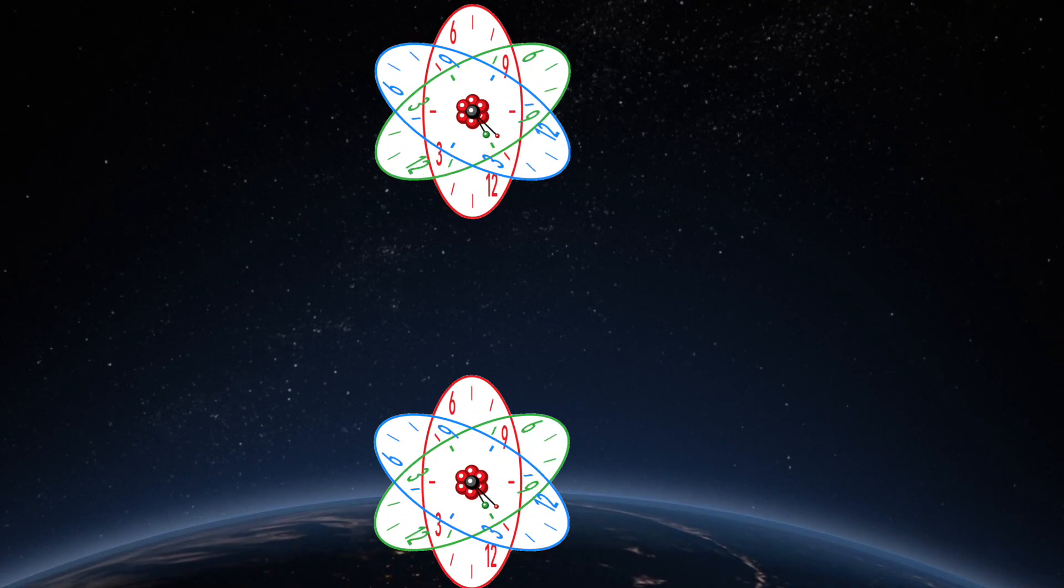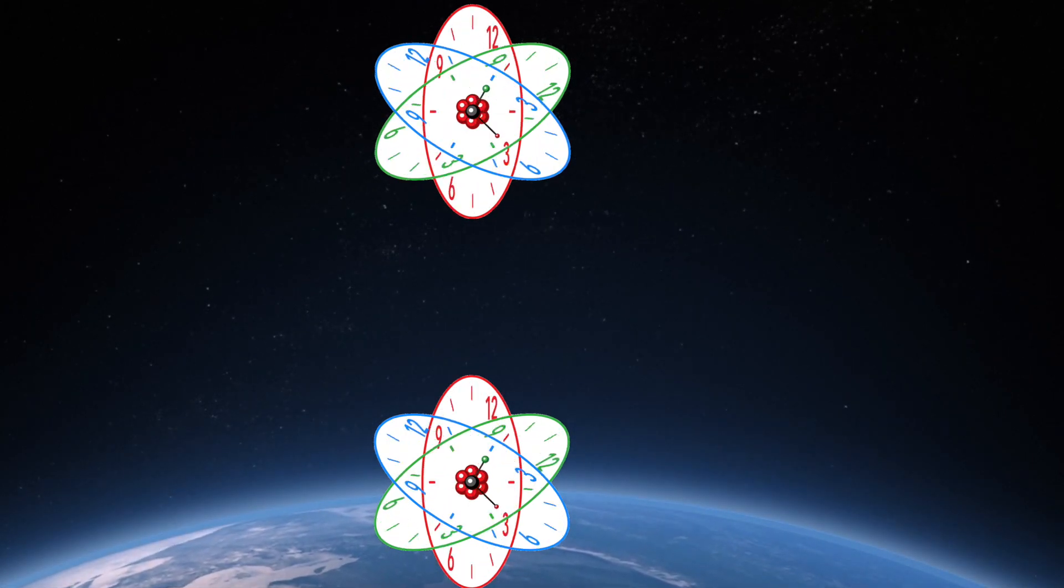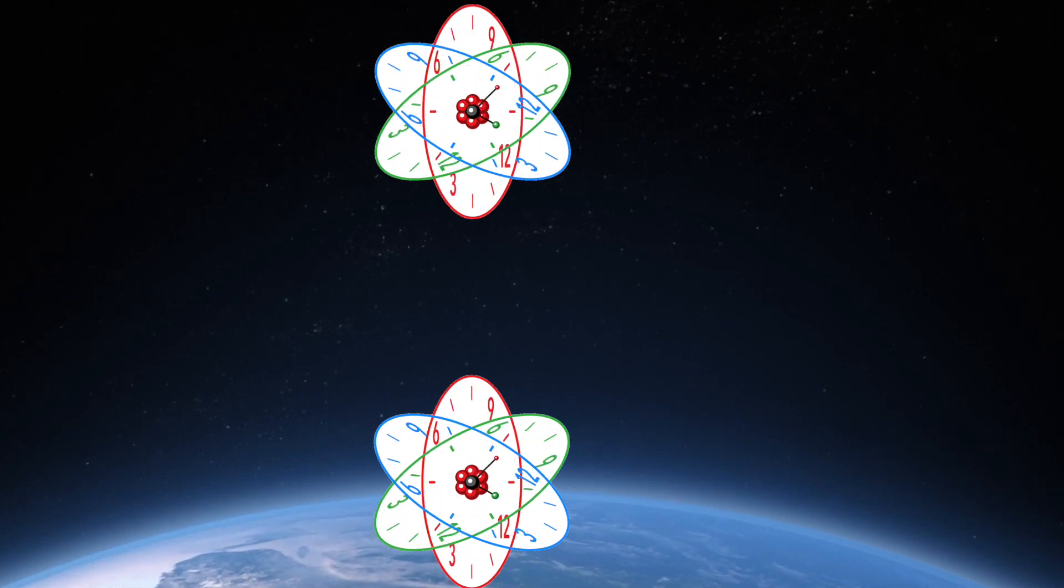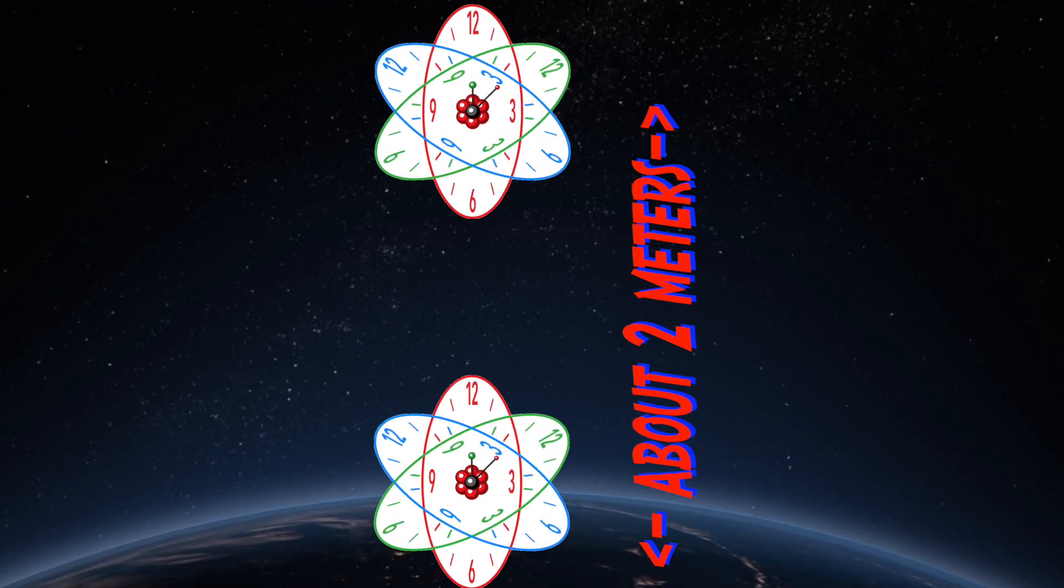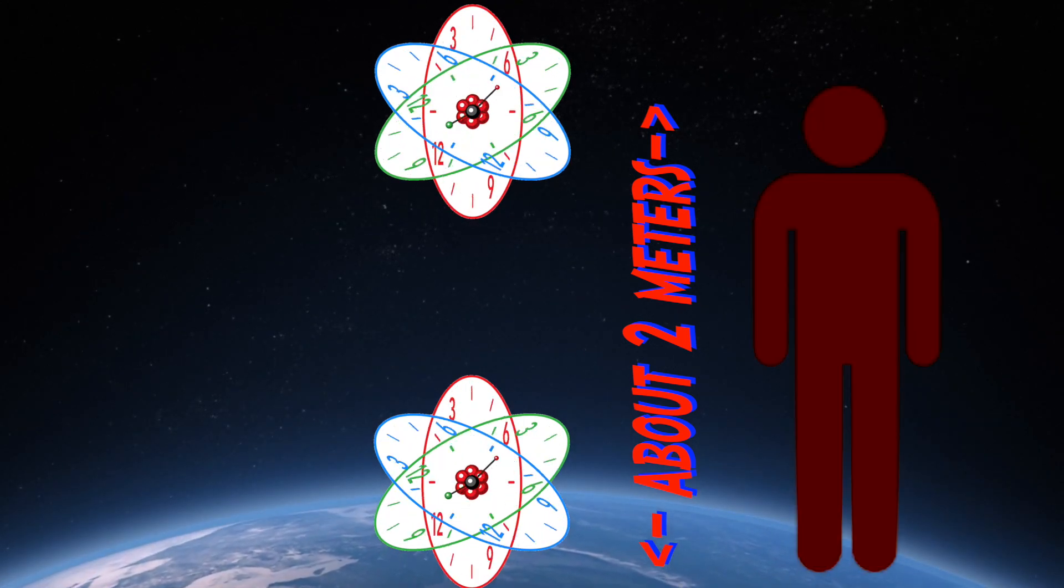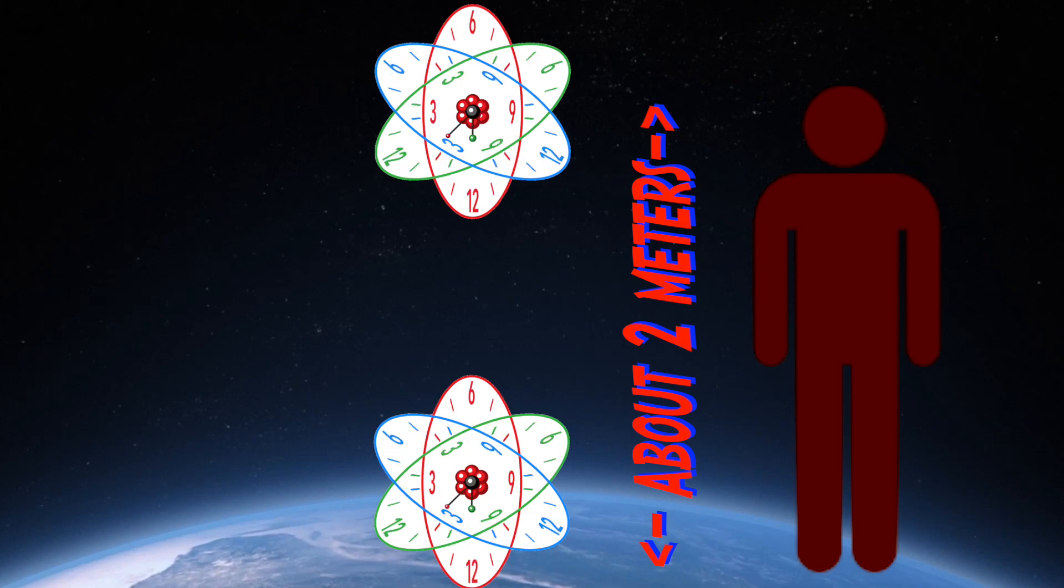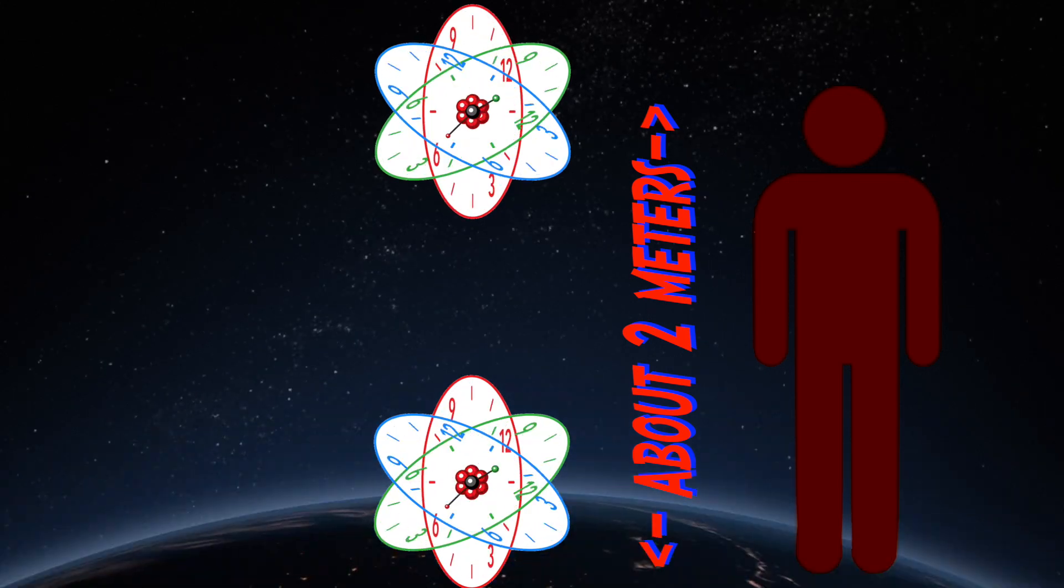What they did is they used two atomic clocks. One they put on the surface of Earth and the other one they placed about two meters above the surface of Earth. That's two meters, usually about 200 centimeters, that's usually the height of a human being.